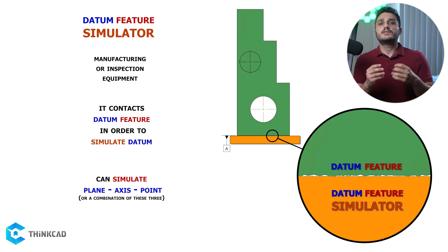The principle is that your datum feature simulator has to be manufactured with much less error compared to your part to be able to do its job correctly.